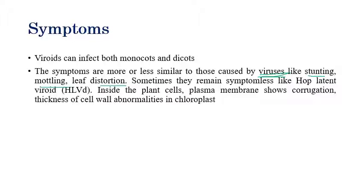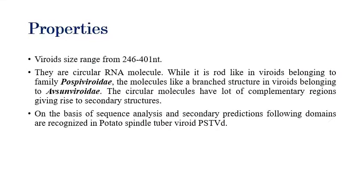Two important facts to remember: viroids can only infect plants — no viroid infecting animals has been discovered so far. Also, the viroid genome contains only single-stranded RNA; no DNA viroid has been discovered. Viroids contain RNA as their genetic material.